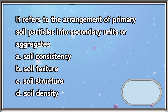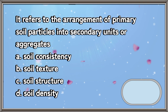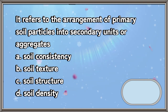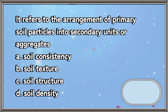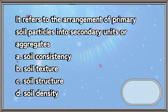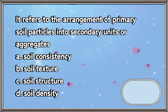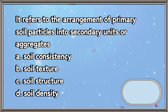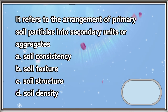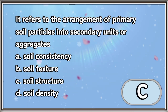It refers to the arrangement of primary soil particles into secondary units or aggregates. A. Soil consistency. B. Soil texture. C. Soil structure. D. Soil density. The answer is letter C.